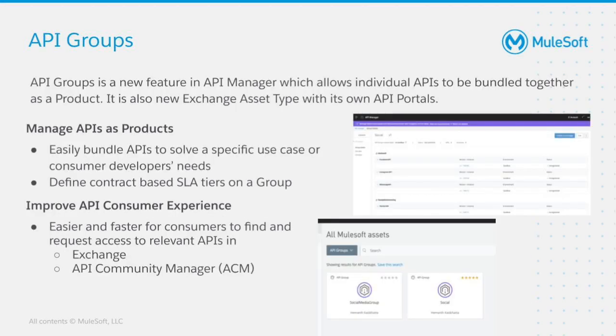Let's talk about what API groups are. API groups is MuleSoft's version of API products and is actually derived from a concept called API as a product, which is a consumer use case-centric approach to bundle APIs to solve a specific requirement. You can package individual APIs or microservices into API as a product by using these API groups. It allows API owners to group a set of relevant APIs and manage their lifecycle as one product. It also enables API group owners to define different SLA tiers and contracts for their consumers. Consumers can discover all the required APIs in one API group and request access to the entire group with just a single click in Anypoint Exchange. These API groups can also be shared with an organization's partners and external developers through API Community Manager.